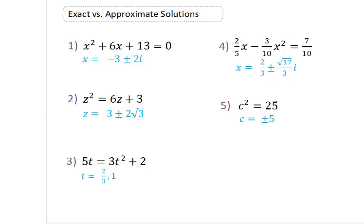In a word problem, if they asked you what your distance was and you gave them the answer 'my distance is 3 plus 2 root 3 feet,' that's probably not going to make much sense. So we have to figure out what that is approximately.